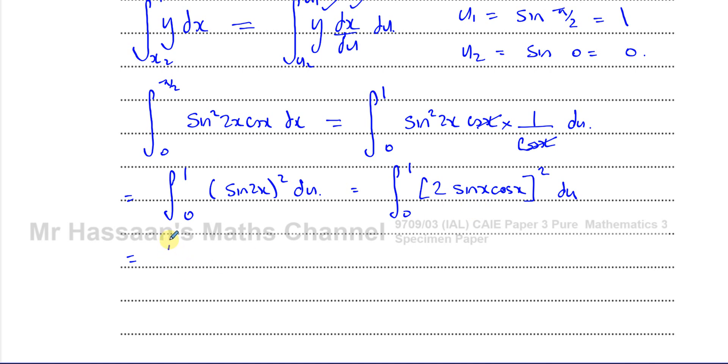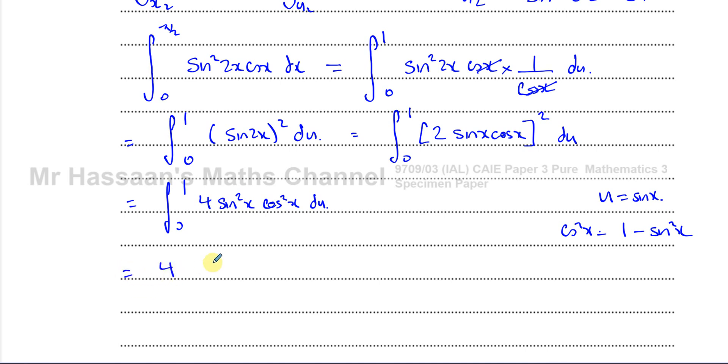I have to integrate that with respect to U. It has to be in terms of U, so I can continue trying to simplify it. I can write the sine of 2X as 2 times sine X times cosine X, as we saw from the double angle formula, but that's all squared. This is going to become 2 squared, which is 4. So we have 4 times sine squared X times cosine squared X. U is equal to sine X, so I can rewrite this as U squared. We can rewrite cosine squared X also. We know that cosine squared X is 1 minus sine squared X.